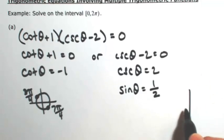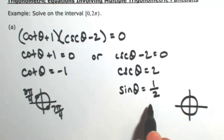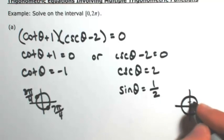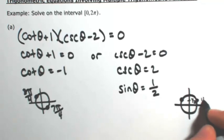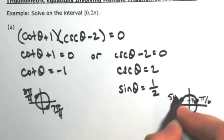So I'm looking for where the y coordinate, we're talking about sine, is 1 half. So the angle whose y coordinate is 1 half would be at π over 6 and 5π over 6.